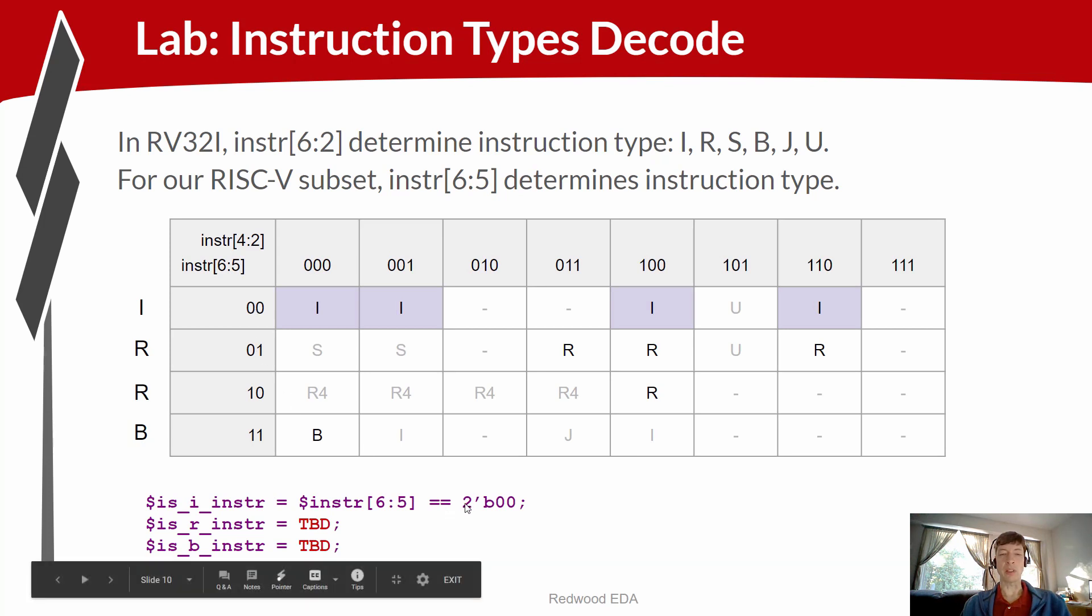So again, using our constant expression notation, a two-bit binary zero, zero value. And again, just to make sure you've got the right tick mark, this is the single quote tick mark. And you'll come up with similar logic expressions for R type and B type.